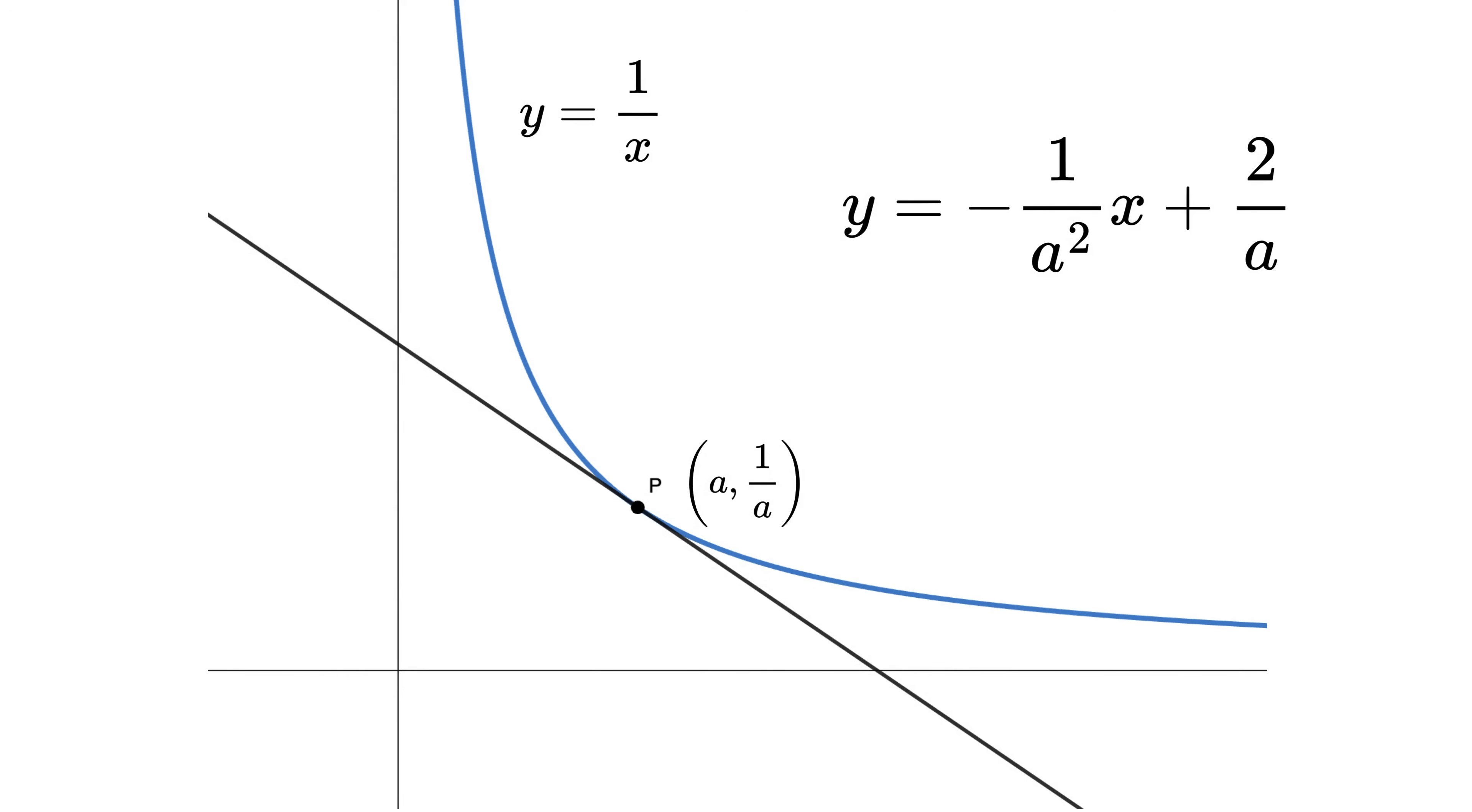Now, from this equation we can find the x-intercept, or this point by putting y equals 0. We get this. Take this here to get 1 over a square x equals 2 over a. Multiply a square both sides to get x-intercept equals 2a.